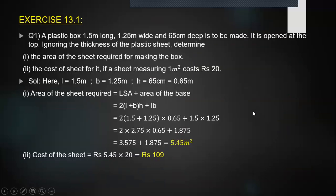Next, I'm going to move to the first exercise of the chapter, which is 13.1, and I'm going to begin with question number one. A plastic box, 1.5 meters long, 1.25 meters wide and 65 centimeters deep is to be made. It is opened at the top, ignoring the thickness of the plastic sheet. Determine the area of the sheet required for making the box and the cost of the sheet for it if a sheet measuring one meter square costs rupees 20.